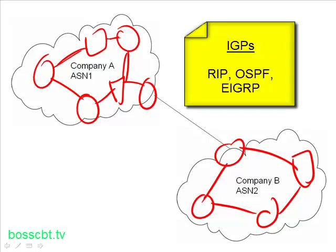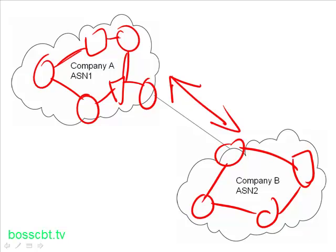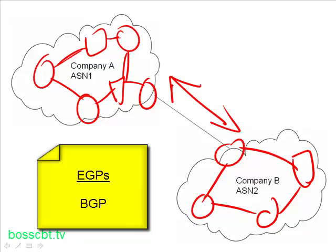When these two companies want to send traffic to and from each other, they use a protocol — specifically an exterior gateway protocol. One of the most common ones is BGP, the Border Gateway Protocol, which is an EGP. By using that, they can exchange routing information so that if they have data to send to each other, they know how to route there.